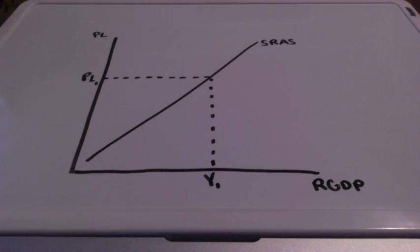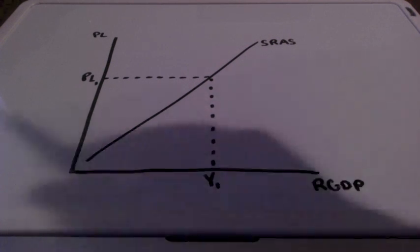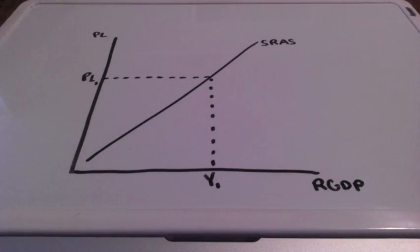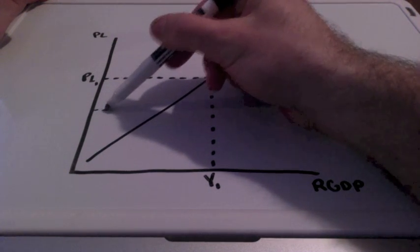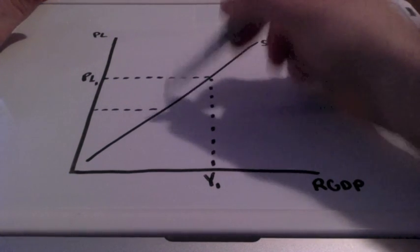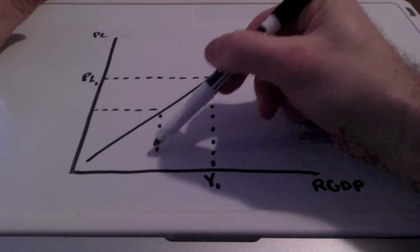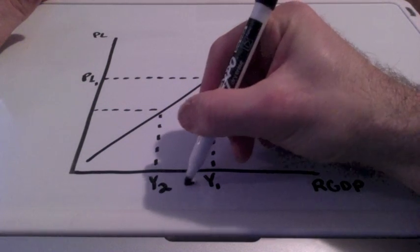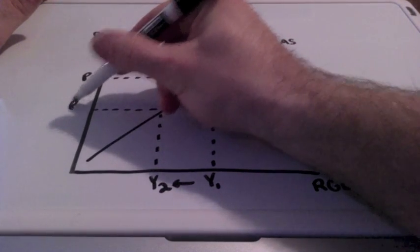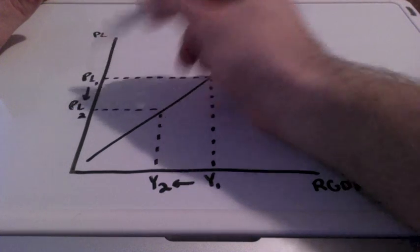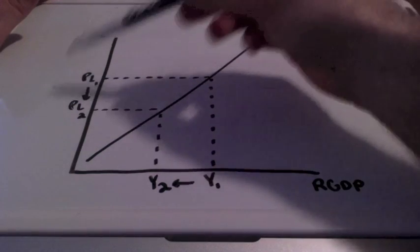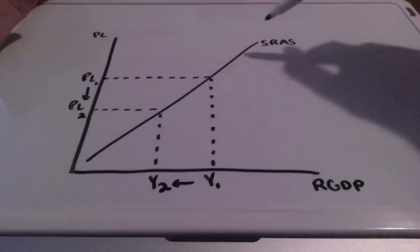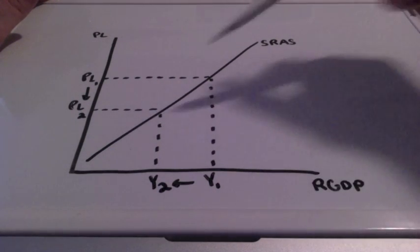We previously stated that there is a direct relationship between price level and GDP when discussing the short run aggregate supply curve. So if our price levels decrease from PL1 to PL2, our GDP will also decrease from Y1 to Y2. Our expenditures are decreasing as we move downward along the short run aggregate supply curve.